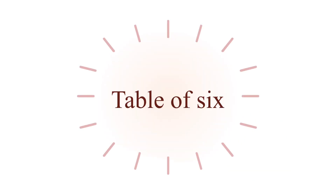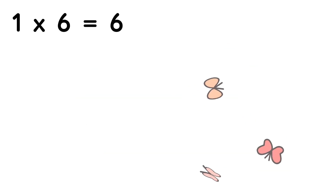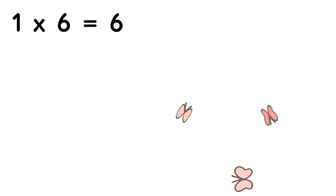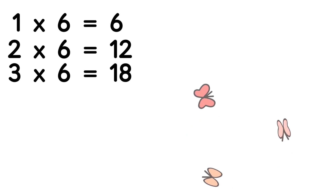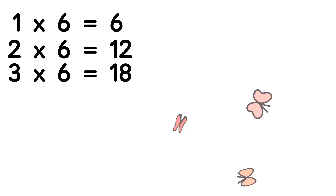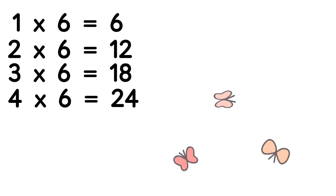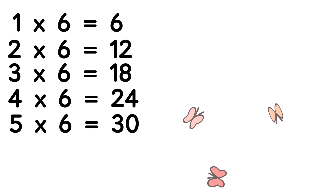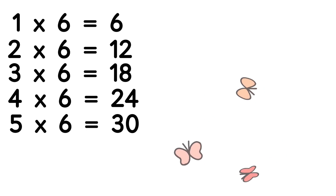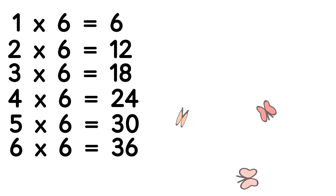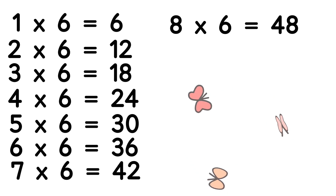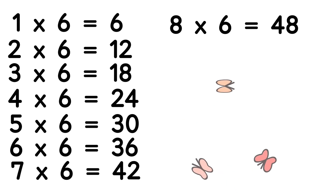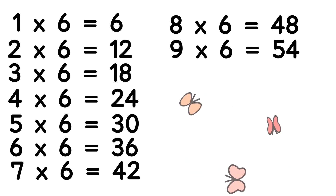Table of 6: 1 six is 6, 2 sixes are 12, 3 sixes are 18, 4 sixes are 24, 5 sixes are 30, 6 sixes are 36, 7 sixes are 42, 8 sixes are 48.